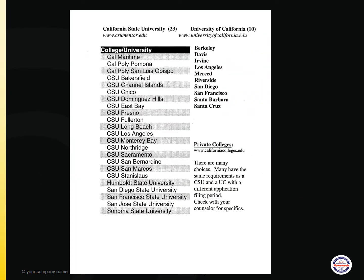Within our home state, there are 23 California State Universities, better known as CSUs, 10 University of California schools, better known as UCs, as well as private colleges. Should you choose to apply out of state, there are a number of private colleges and public colleges as well.